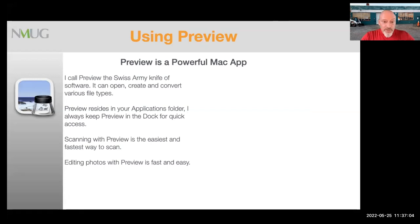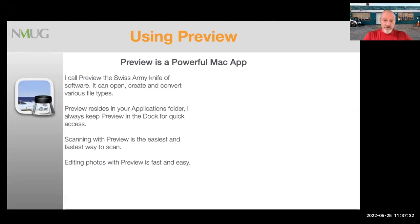I call Preview the Swiss Army knife of software. It can open, create, and convert various file types. Preview resides in the Applications folder — I always keep it in the dock for quicker access. Preview scanning is the easiest and fastest way to scan. With two or three clicks you can scan without any third-party software or buttons on the scanner. We'll also talk about how to edit photos with Preview, which is fast and easy. It's not a full photo editor like Photoshop, but it has some very useful tools.